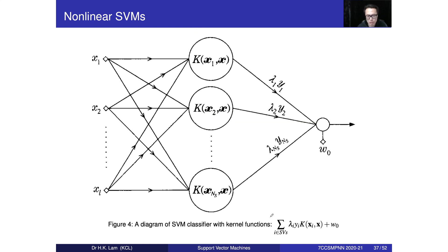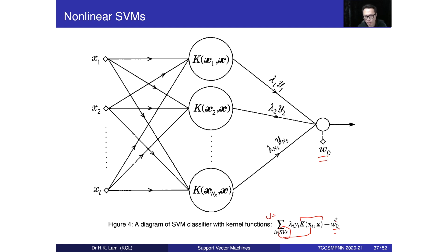Now, this is W with the kernel function: W equals the sum of lambda-i times y-i times the kernel function K(xi), only for the support vectors, plus W-naught. Graphically, we can draw it like this — W-naught comes in here, and then we have K from x1, x2, up to the number of support vectors. These K values are contributed only by the support vectors, as we learned before.